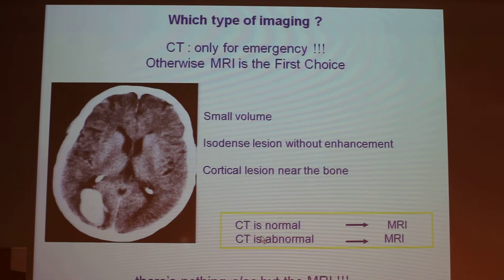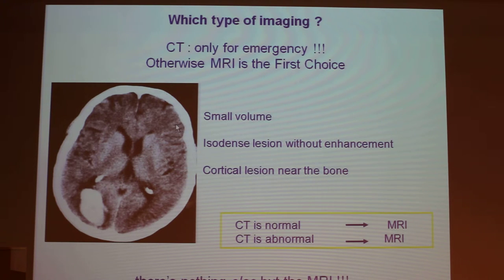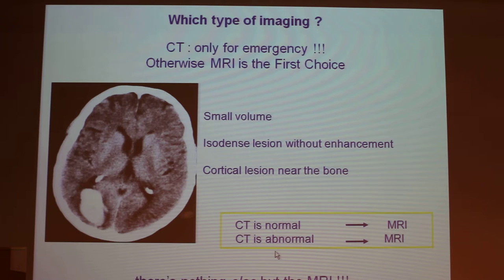Which type of imaging? CT is only for the emergency. Otherwise, MRI is the first choice. You perform CT scan for a hematoma, but in other cases you perform an MRI. Because the lesions are sometimes small, isodense lesions without enhancement, and they could be cortical lesions near the bone. So if the CT is normal, you perform the MRI — and if the CT is abnormal, you perform the MRI. So there is nothing else but the MRI.